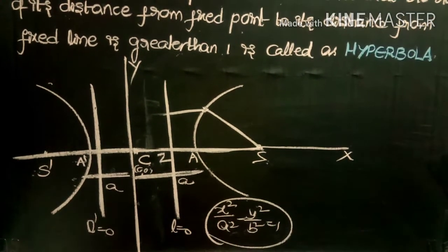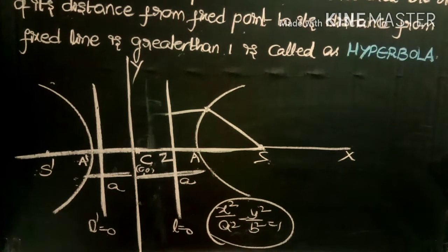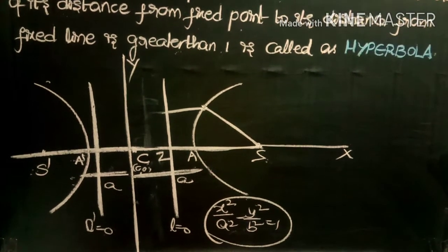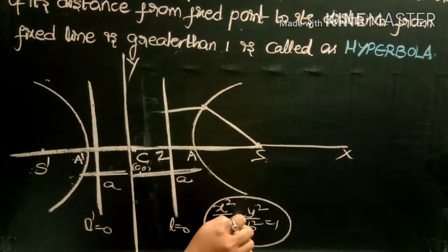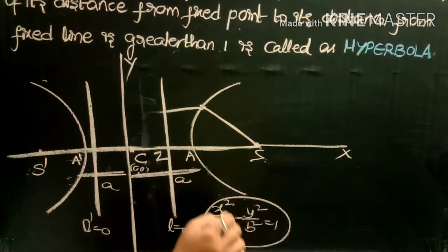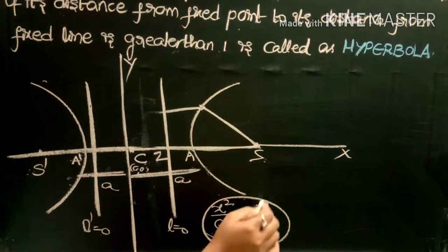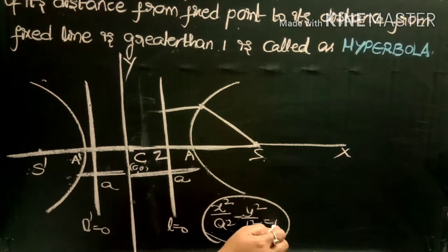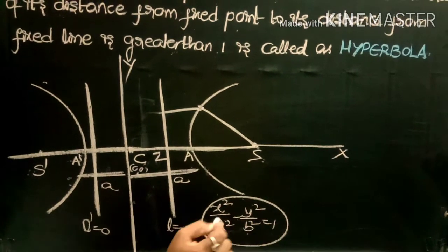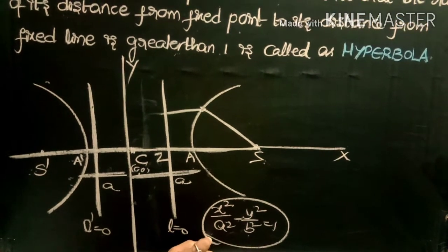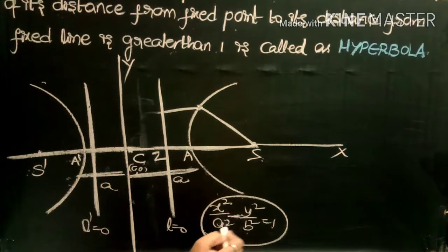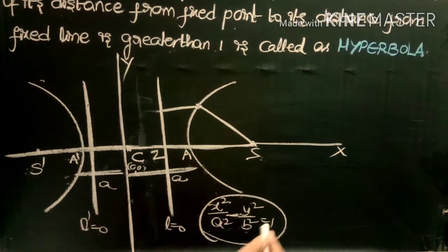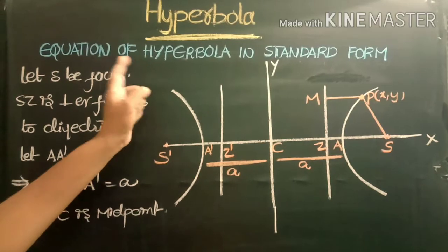The only difference between the ellipse and hyperbola is the sign: in the ellipse we have x squared by a squared plus y squared by b squared equals one, but in the hyperbola we take a minus sign, giving x squared by a squared minus y squared by b squared equals one.